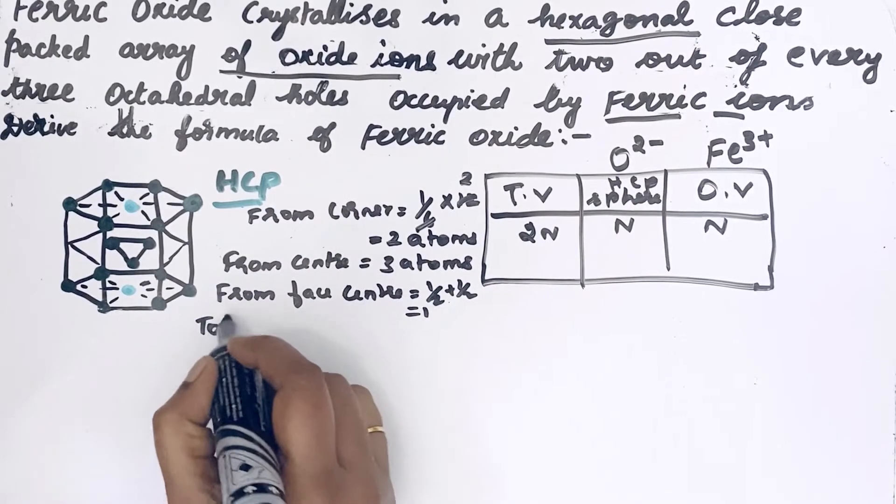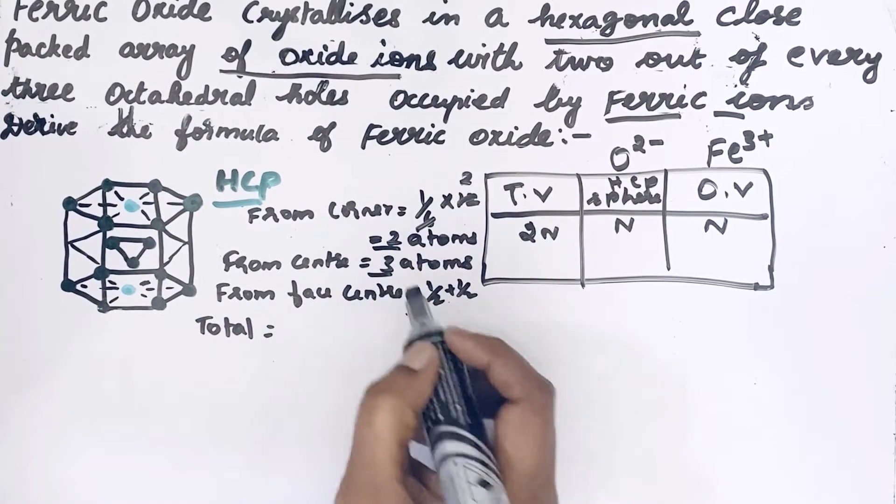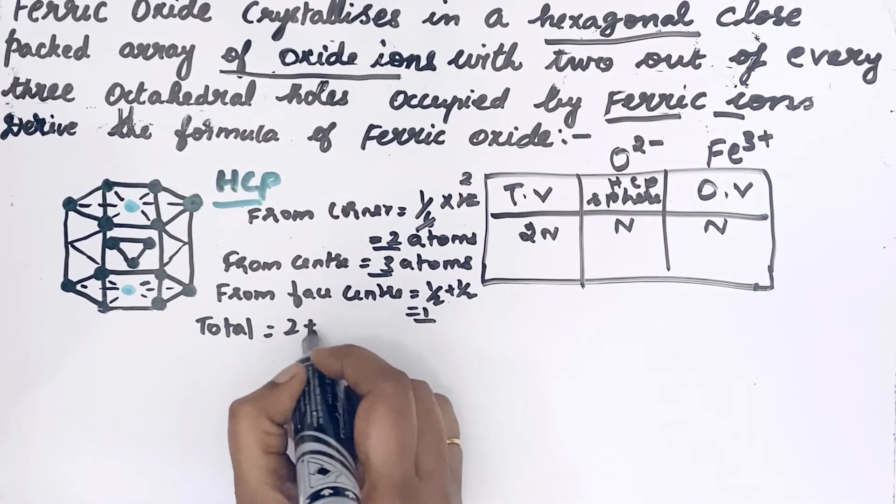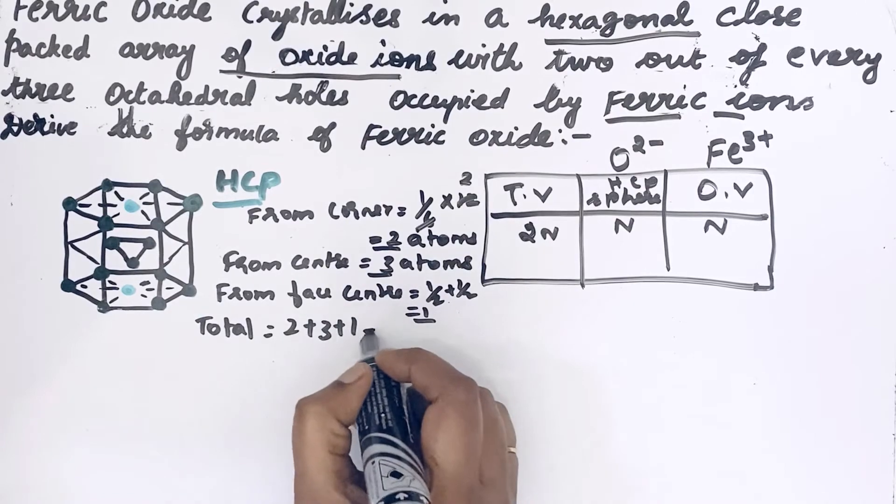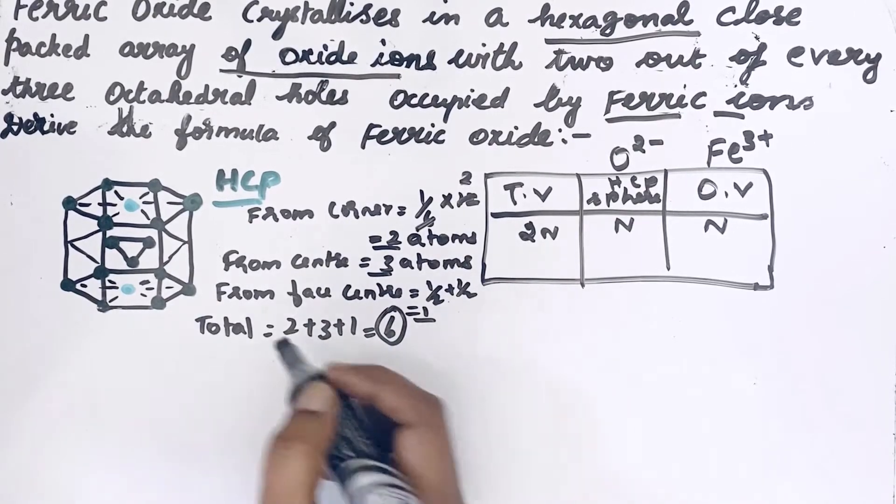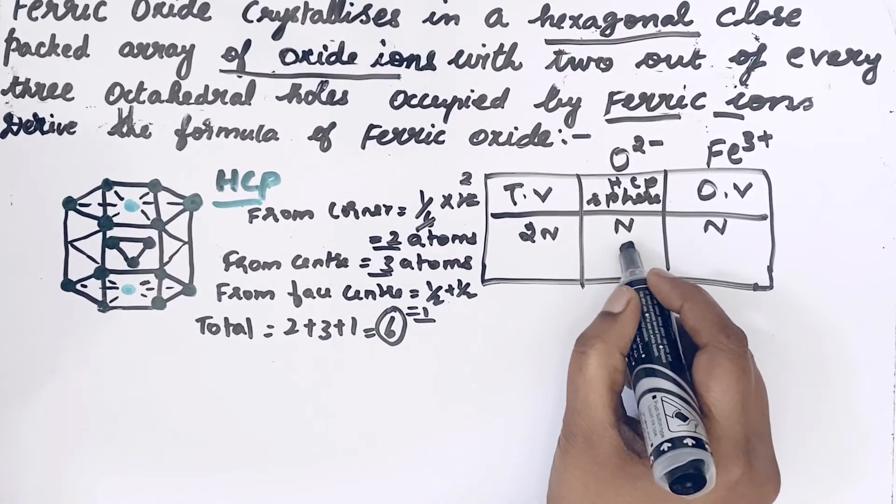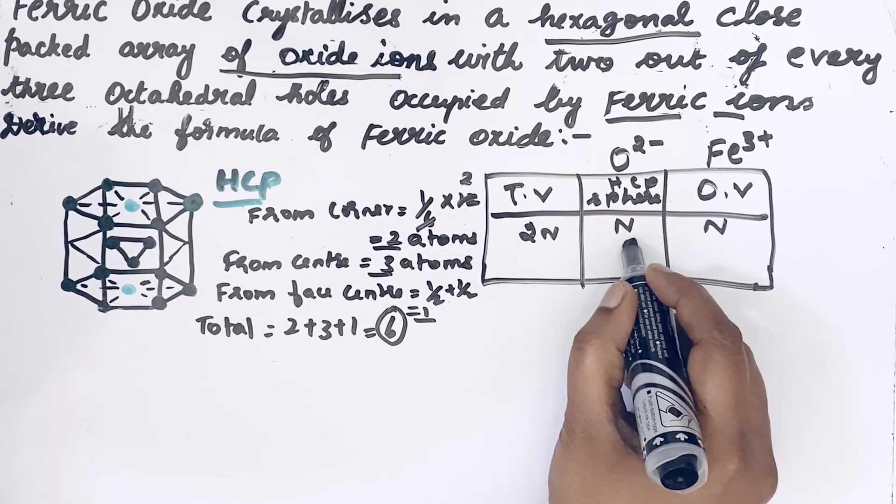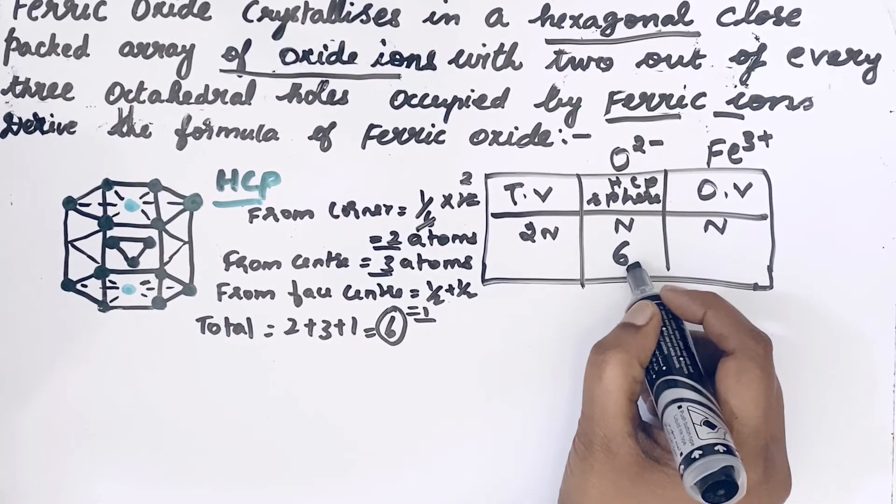Let us find the total number of atoms: 2, 3, and 1. So 2 + 3 + 1 = 6. We are going to write this 6 in HCP sphere.